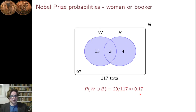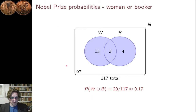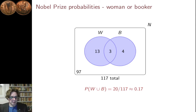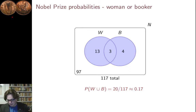What about the probability that if you chose somebody at random, they'll be either a woman or a Booker Prize winner? Then we're asking what's the probability that the person you choose at random will come from the event formed by the union of women and Booker Prize winners. That union, W union B, is the whole set coloured in blue — there are 20 of those. 20 divided by 117 is about 0.17. So when we're dealing with events, unions take the place of 'or' when we're talking about probabilities. The probability of a woman or a Booker Prize winner is the probability of W union B, which is 0.17.